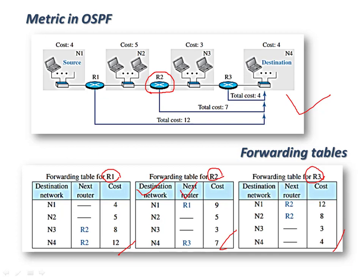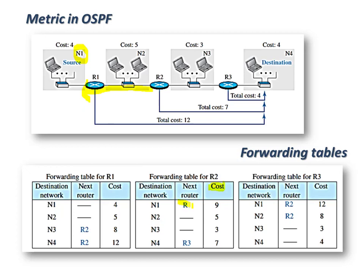The forwarding table is similar to RIP (Routing Information Protocol), except here we use cost instead of hop count. For a packet to travel from router 2 to destination network n1, the next router is router 1, and the cost is calculated as 5 + 4 = 9. This is how routers prepare the forwarding table when the system is stabilized.